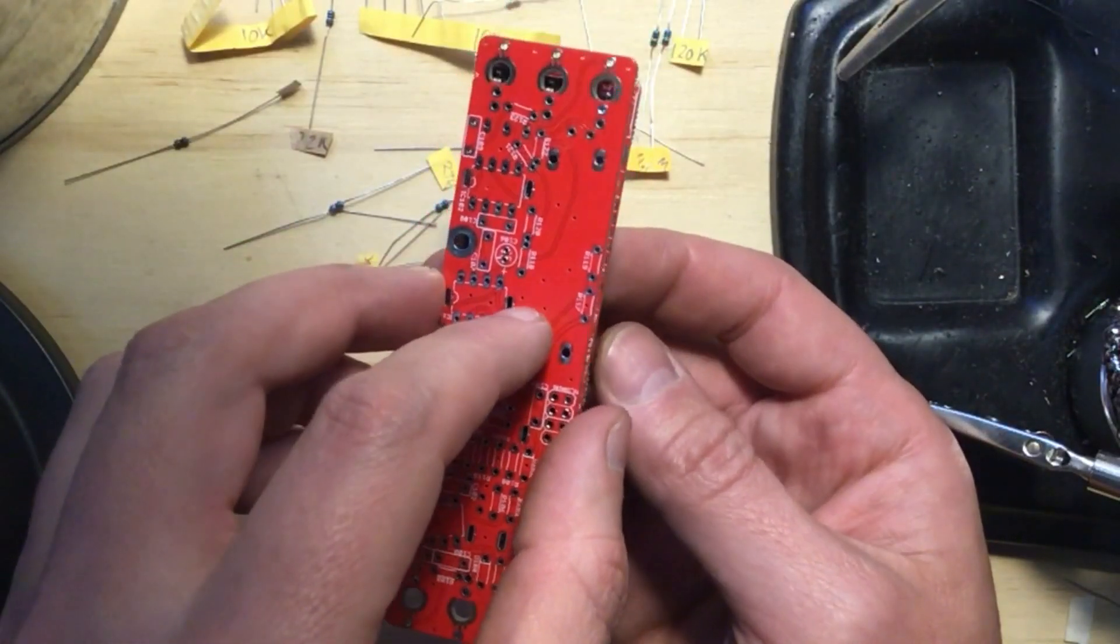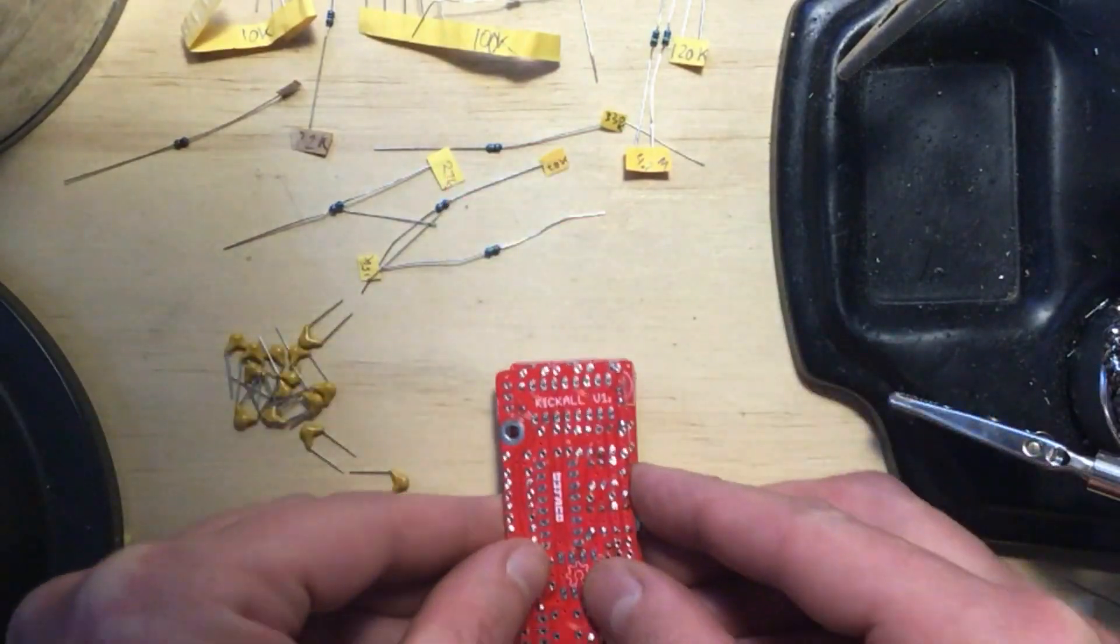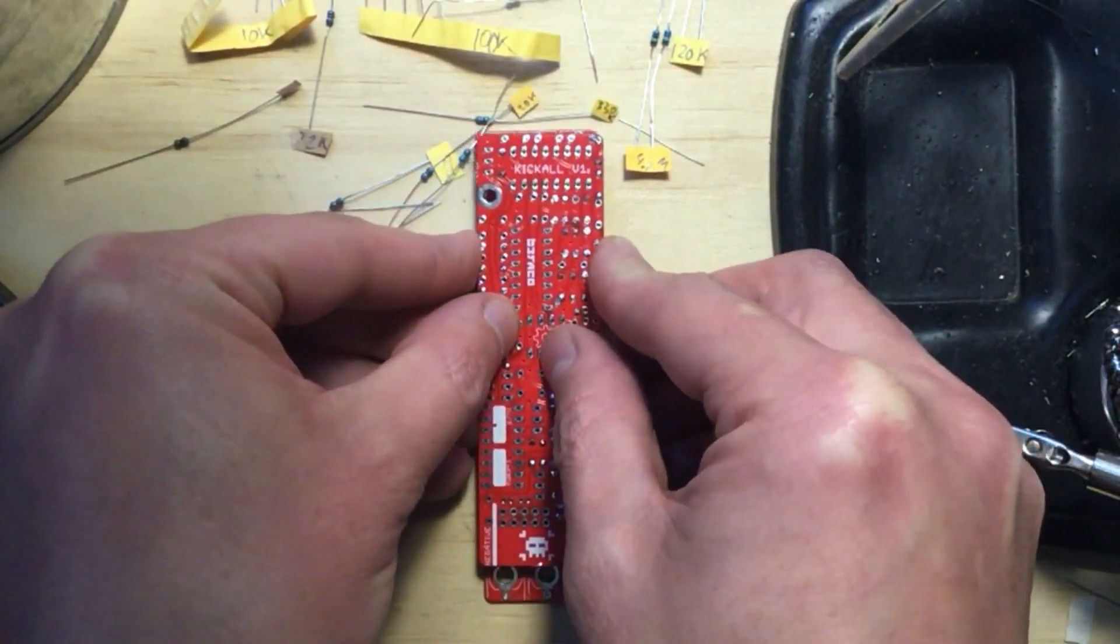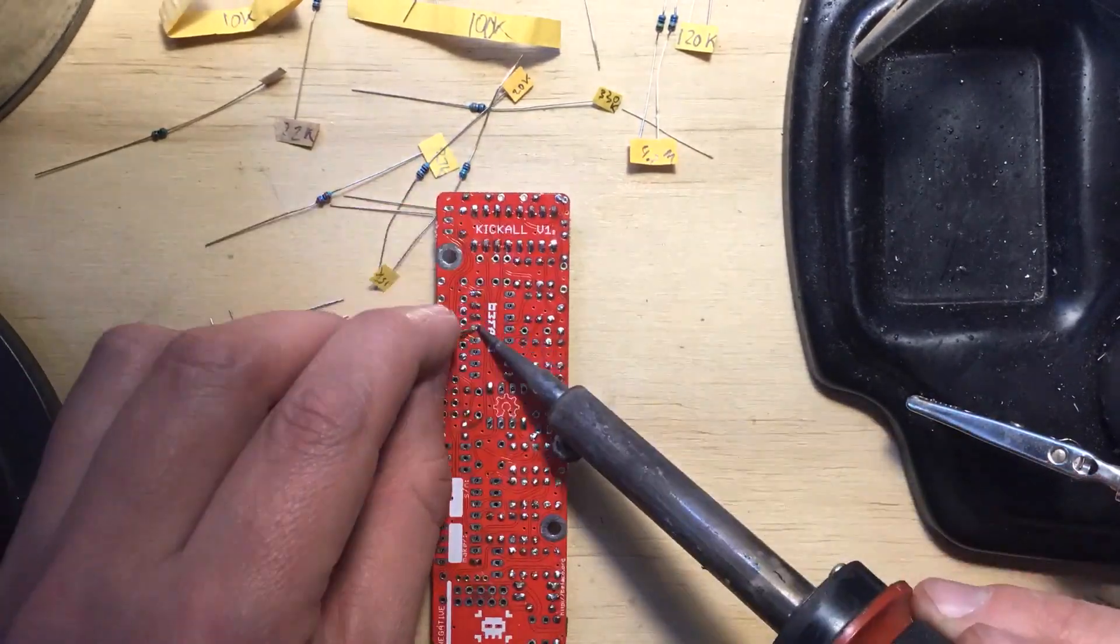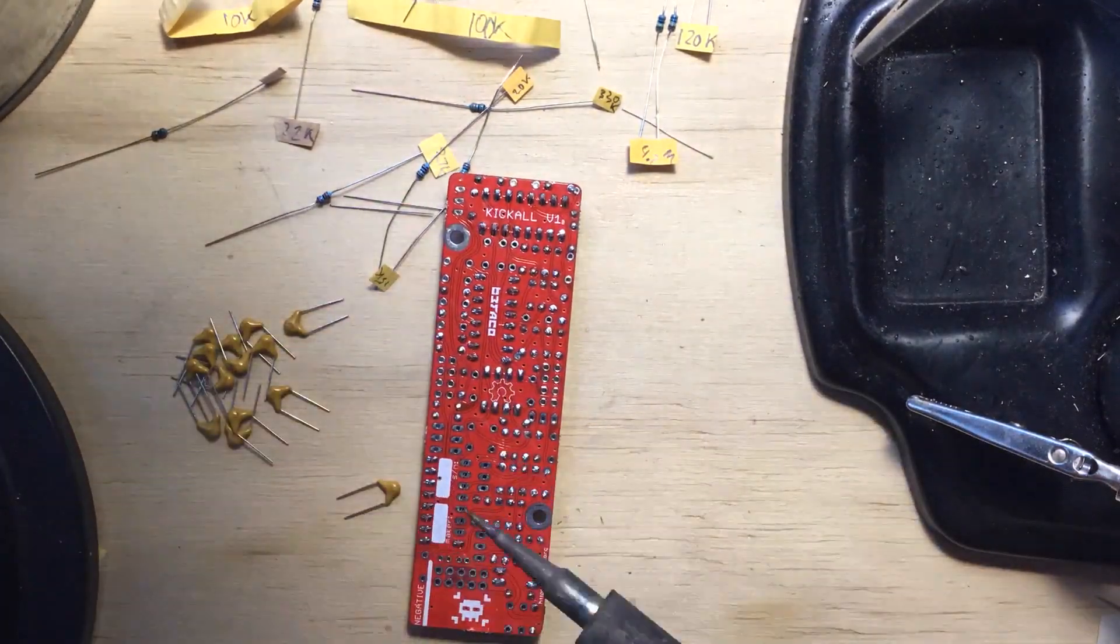Then I used the second PCB to hold the IC sockets in place as I turned the board around to solder them. This time the sockets covered the designators for some of the capacitors so I recommend you first take a picture of the PCB with your phone for future reference.